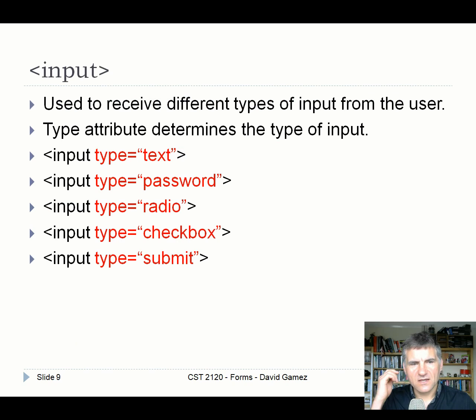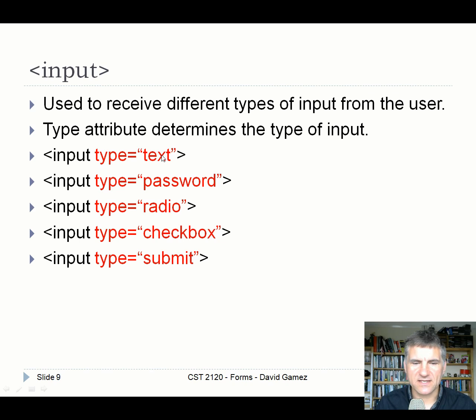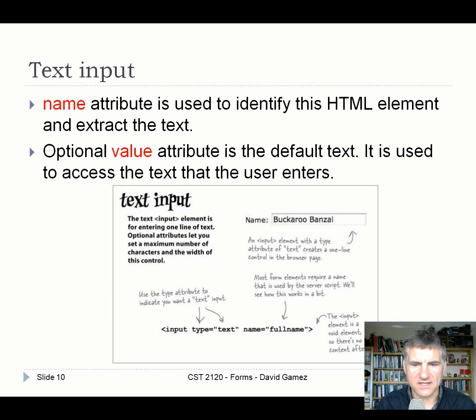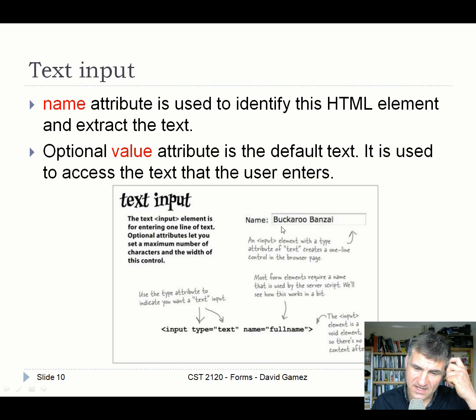Input fields are the key thing in forms — they receive different types of input from the user. Depending on the type, the user sees a different widget. Types include text, password, radio, checkbox, and submit. A text input is the most common — a standard single-line text field. Each input has a name that serves as the key for whatever value the user enters. For example, if the person typed 'Buckaroo Banzai', the key would be 'full_name' and the value would be 'Buckaroo Banzai'.